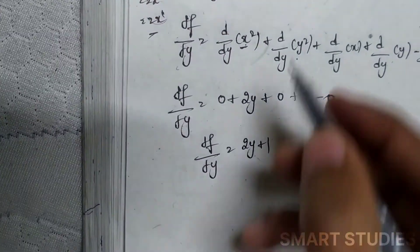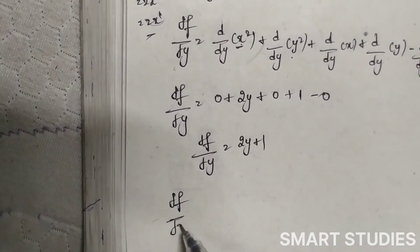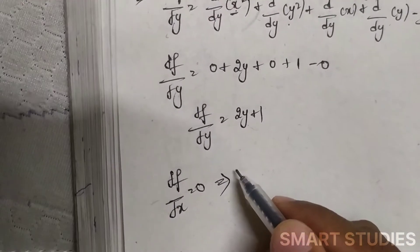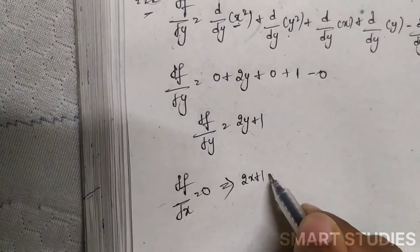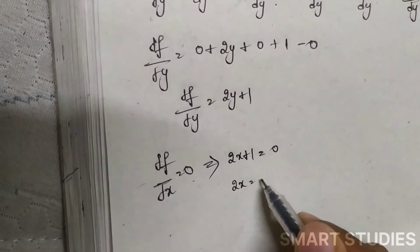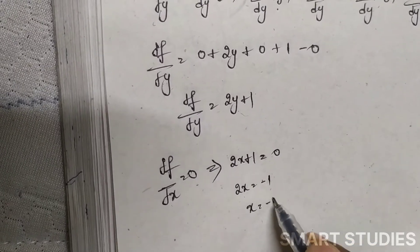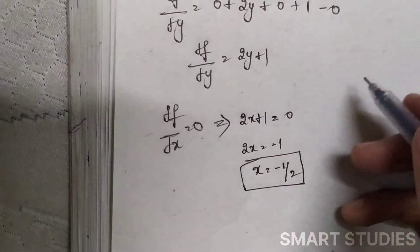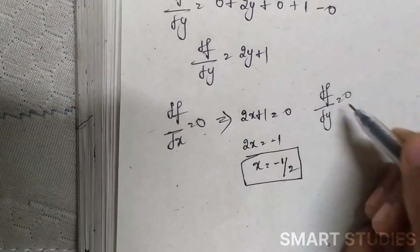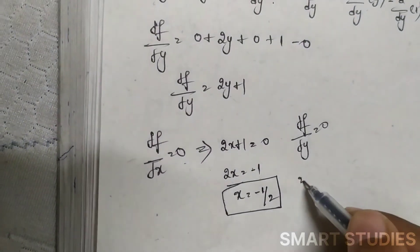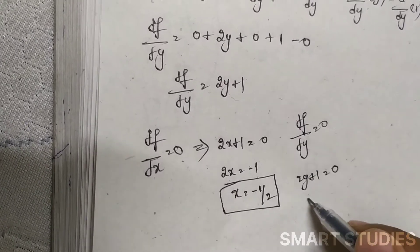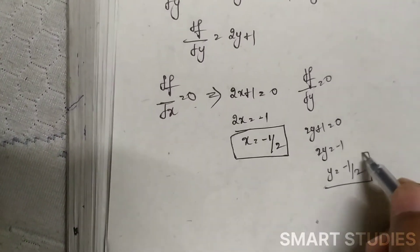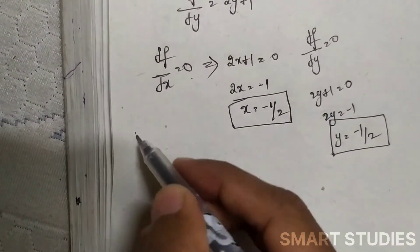Setting ∂f/∂x = 0: 2x + 1 = 0, so 2x = −1, giving x = −1/2. Setting ∂f/∂y = 0: 2y + 1 = 0, so 2y = −1, giving y = −1/2. These are the critical point values. Now we find the Hessian matrix.